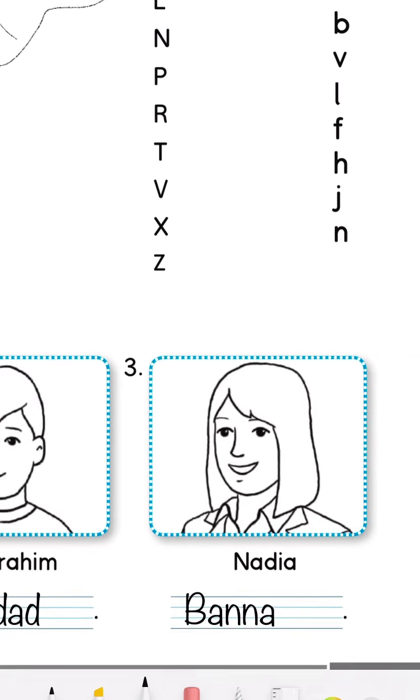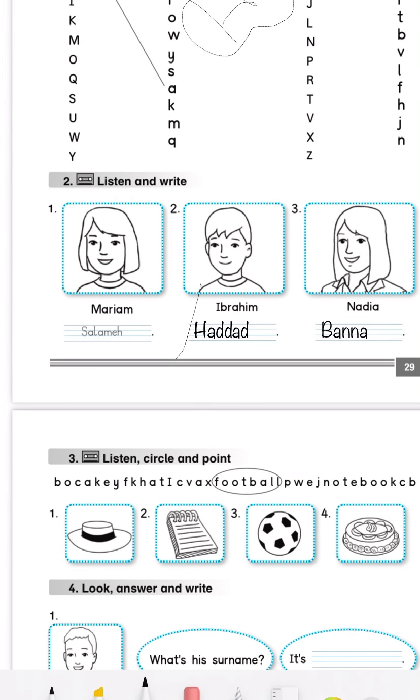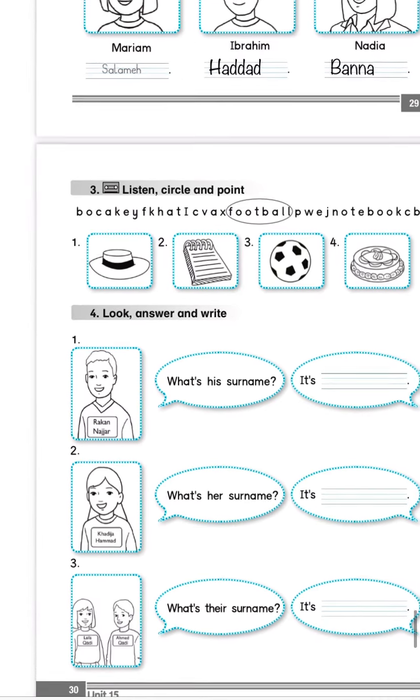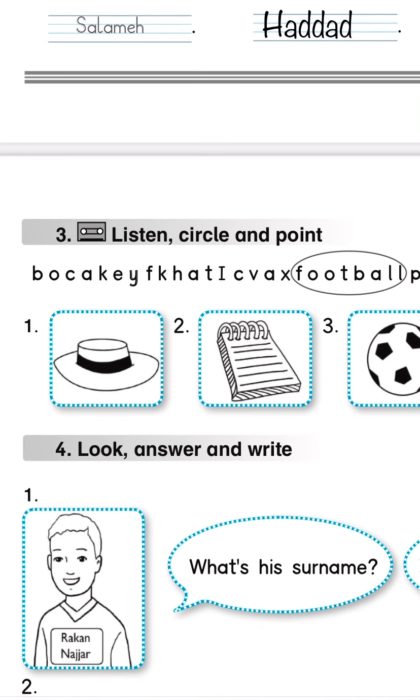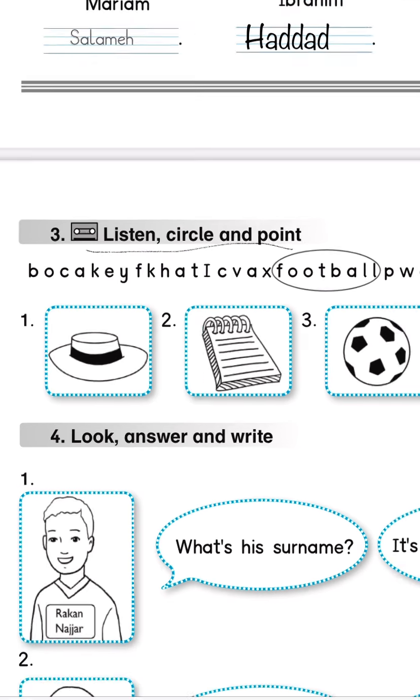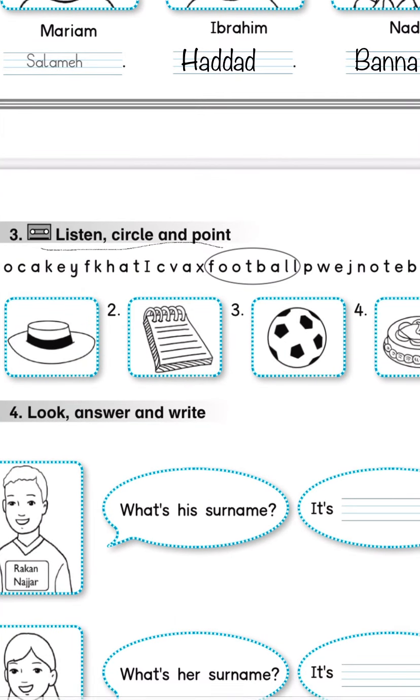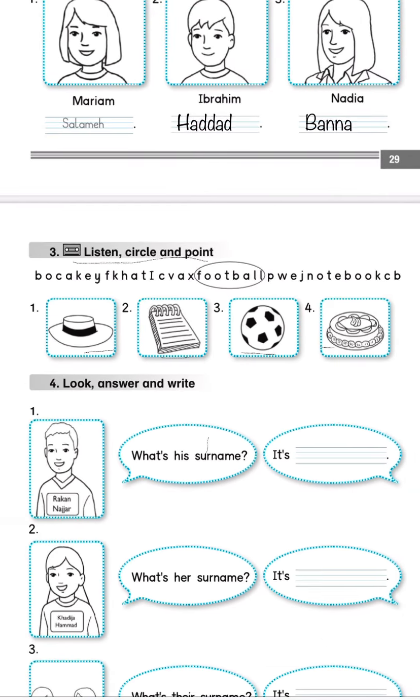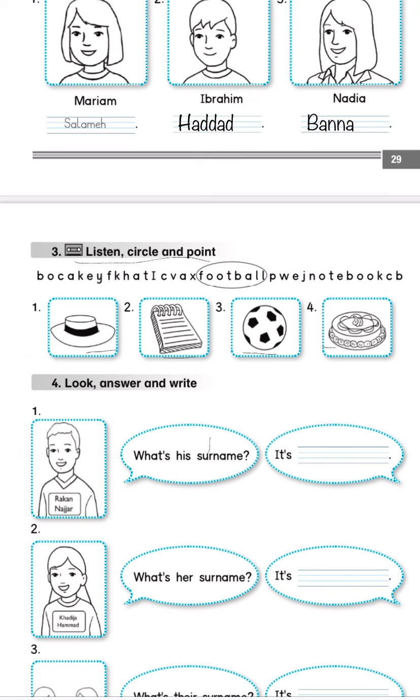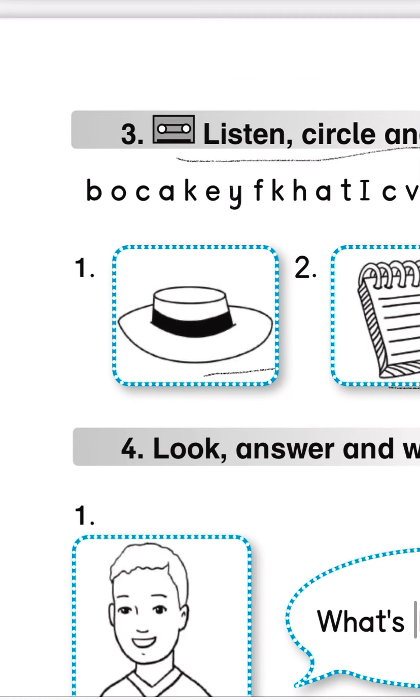So, Ibrahim Haddad, Nadia Banna. Now, let's move to exercise number three. It's very interesting and fun. Exercise number three: we have to listen, circle, and point. Look, here we have four pictures. One, two, three, and four. We have to put a circle on their words or on their names. First, let's say the name of each picture.